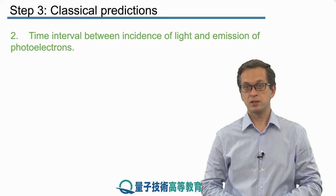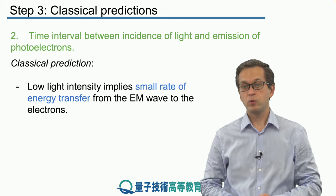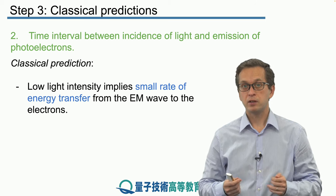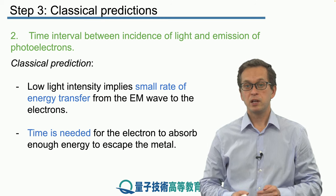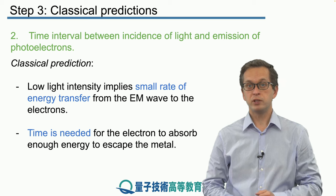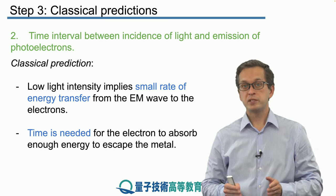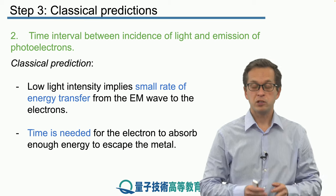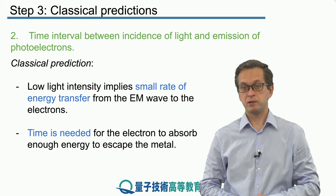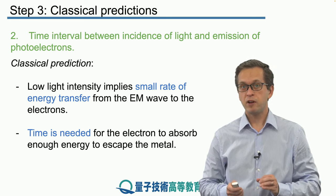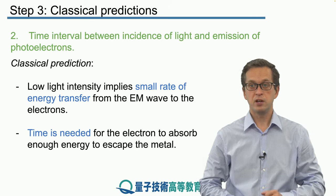Let's look at the second observation: the time interval between the incidence of the light and the emission of the electrons. Classically, we expect that low intensity light, carrying small energy and transferring energy at a smaller rate into the electrons, will require some time to give enough energy to the electrons to be emitted. So from the moment we turn on the light at low intensity, there should be a measurable delay before observing the photoelectrons reach the collector plate. This makes perfect sense — even very low intensity electromagnetic waves carry energy; it just takes longer for that energy to be transferred.